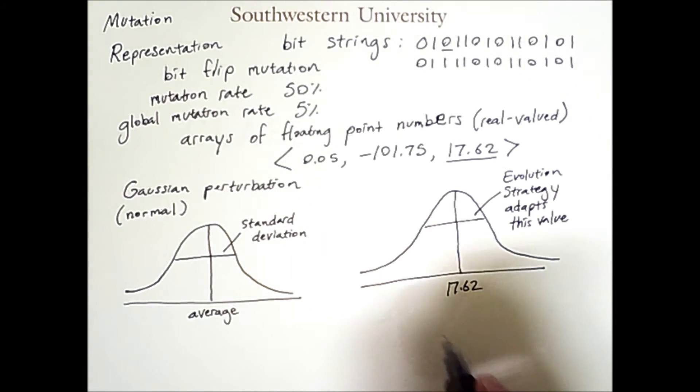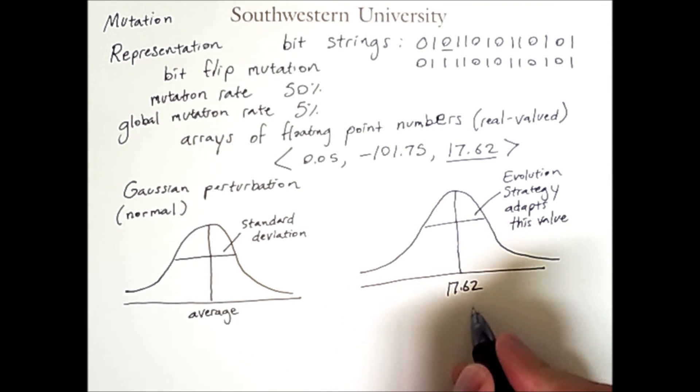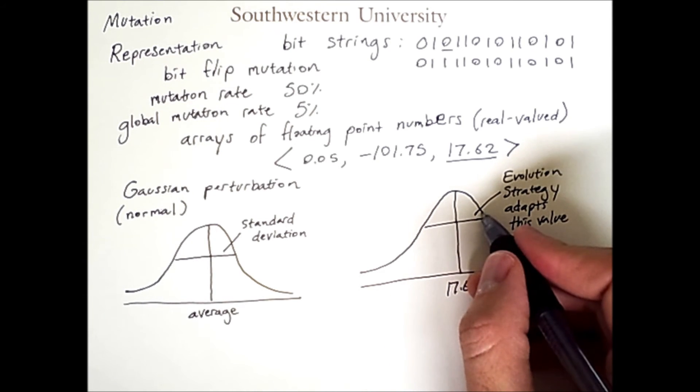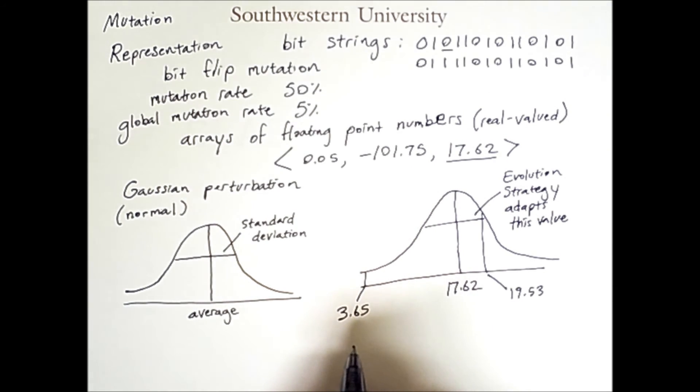This distribution means that a value near 17.62, such as 19.53, is more likely to be the result of mutating that than a value such as 3.65.